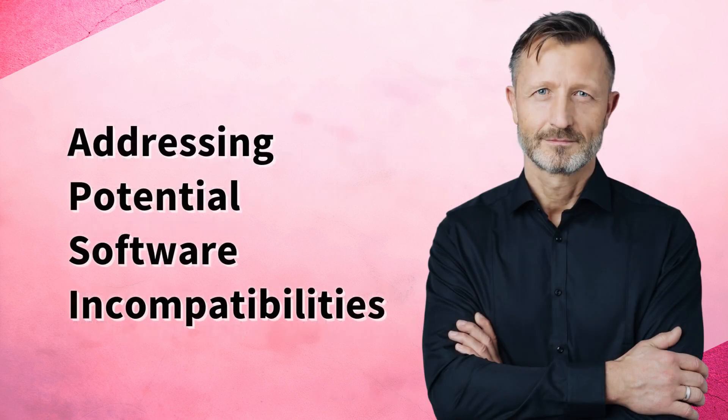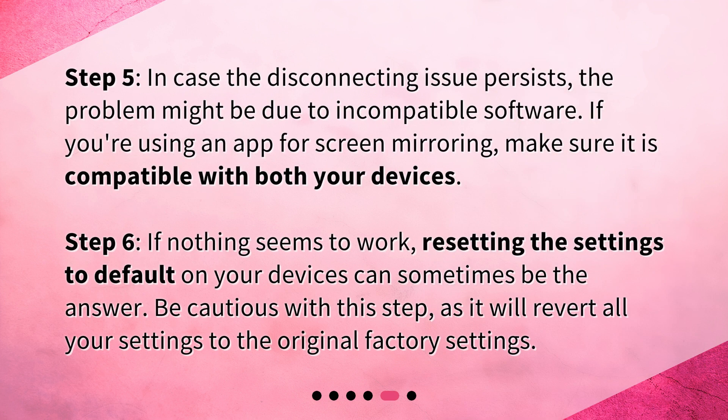Addressing potential software incompatibilities. Step 5: In case the disconnecting issue persists, the problem might be due to incompatible software. If you're using an app for screen mirroring, make sure it is compatible with both your devices. Step 6: If nothing seems to work, resetting the settings to default on your devices can sometimes be the answer. Be cautious with this step, as it will revert all your settings to the original factory settings.